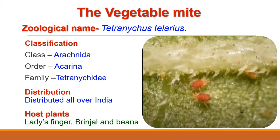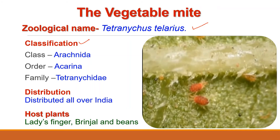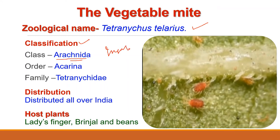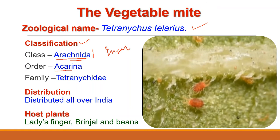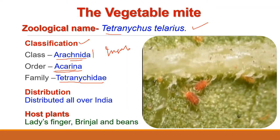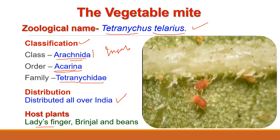The next pest is the vegetable mite. Its zoological name is Tetranychus telarius. Regarding its taxonomic status, it belongs to class Arachnida — always keep in mind that while all other pests belong to class Insecta, this is a mite, so it belongs to class Arachnida. Order is Acarina, family is Tetranychidae, genus Tetranychus and species telarius. It is distributed all over India, in fact throughout the world. Host plants are lady's finger, brinjal, beans and okra.